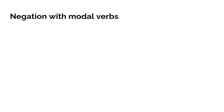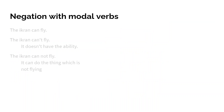But of course it can get a bit more complicated. Modal verbs are things like 'I can fly,' 'I want to fly,' 'I try to fly.' Basically you have constructions with two verbs where the first is the modal verb and the second is just the main verb. For example, 'the ikran can fly' — 'can' is the modal verb and 'fly' is the second verb influenced by 'can.'